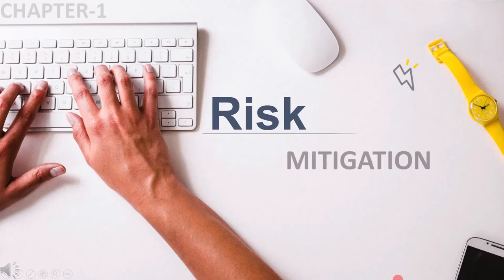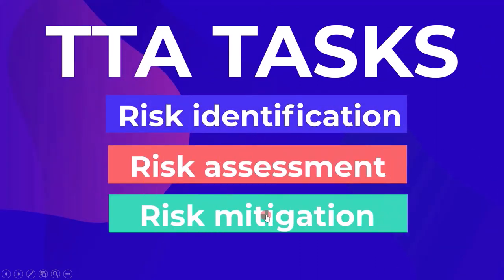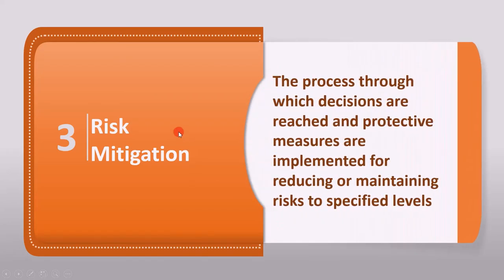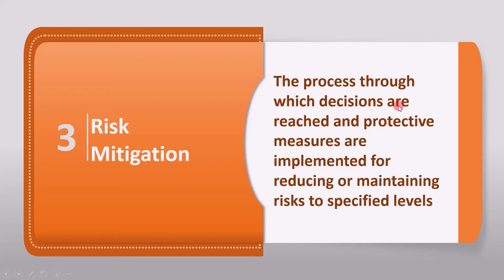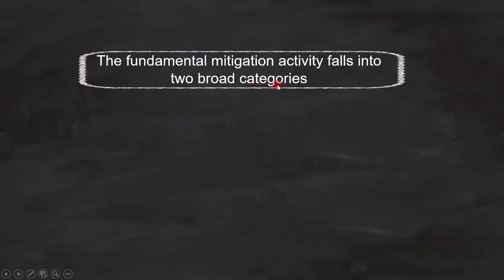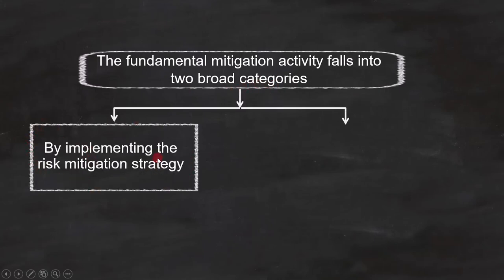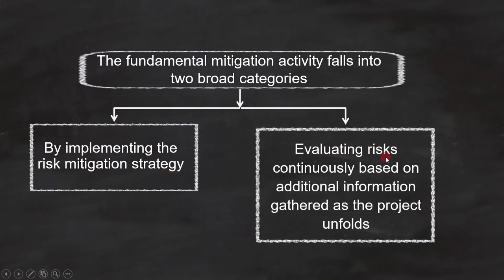In this lecture, we will cover Risk Mitigation. Having identified and assessed risks, we now must mitigate them — this is the third activity in a risk-based testing approach. As per ISTQB, risk mitigation is defined as the process through which decisions are reached and protective measures are implemented for reducing or maintaining risks to specified levels. It's not possible to eliminate risk entirely, but we can reduce it. The fundamental mitigation activity falls into two broad categories: implementing the risk mitigation strategy, or evaluating risks continuously based on additional information gathered as the project unfolds.